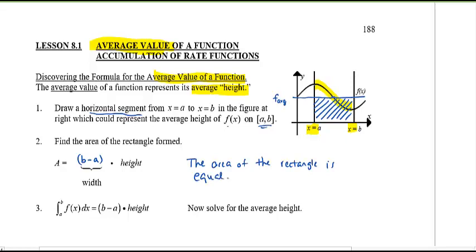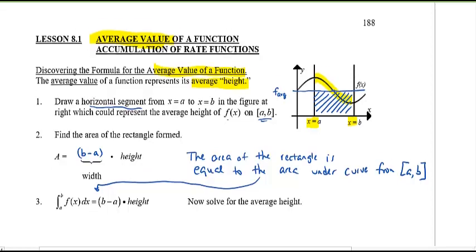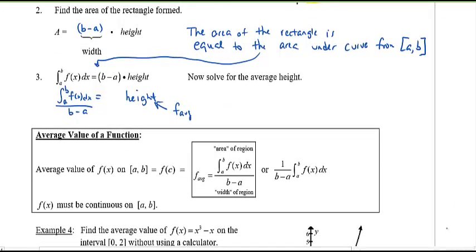That's the case if you want to figure out the average height. Translating into symbols: the area under the curve is the integral from a to b of f(x) dx, and the area of the rectangle is (b − a) times the height. To solve for the average value (the height), divide both sides by (b − a). So the integral from a to b of f(x) dx divided by (b − a) is the average value.